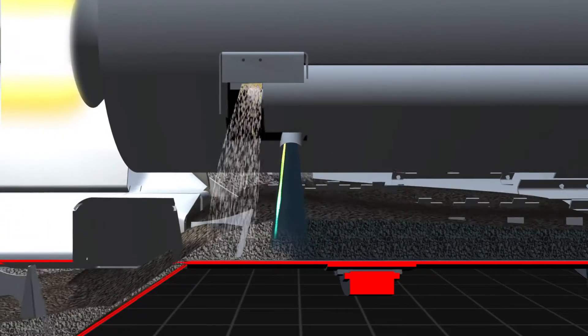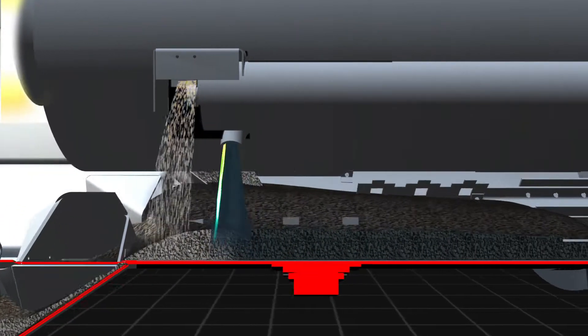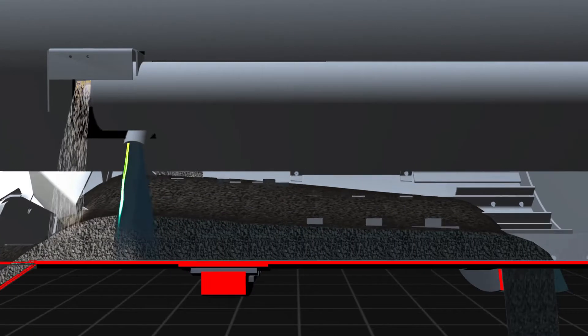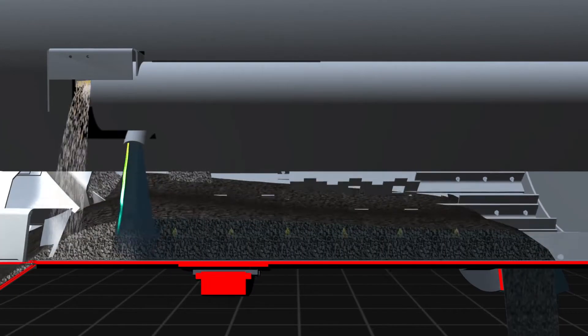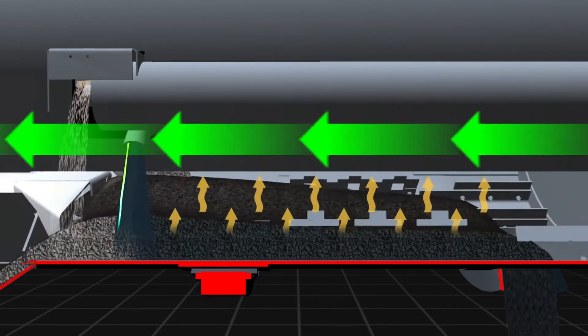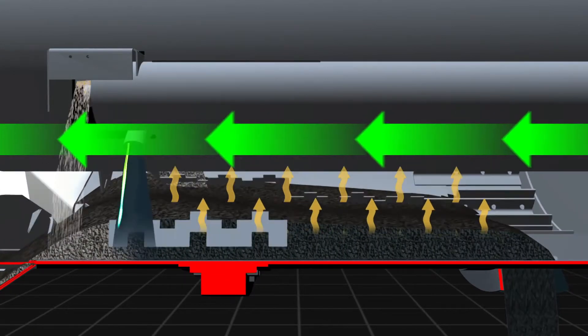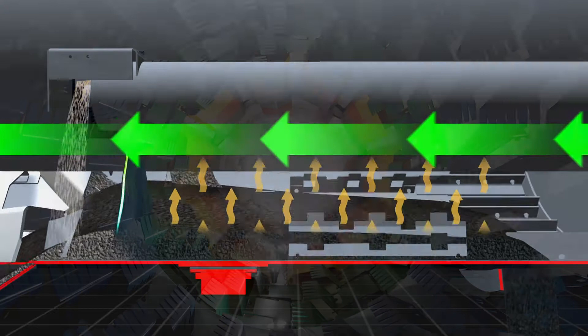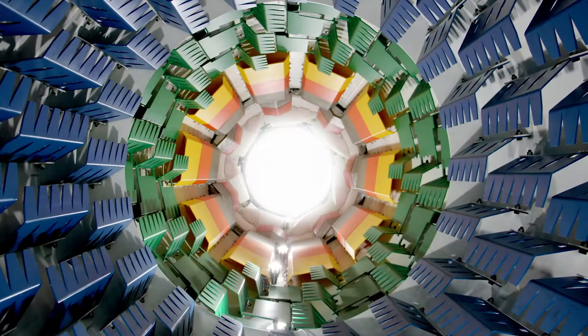Fibers and fillers can be added as required, and everything is thoroughly mixed together, with fumes being drawn back into the combustion zone to be burned, further reducing gaseous emissions.